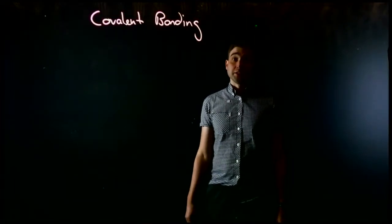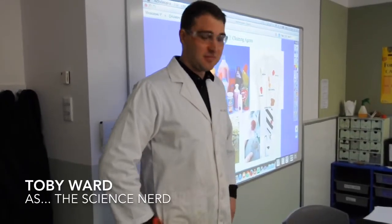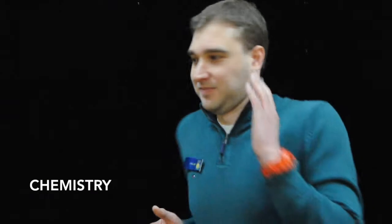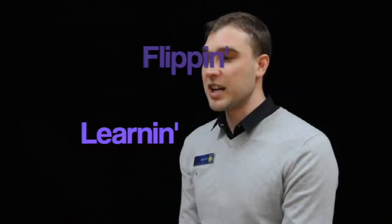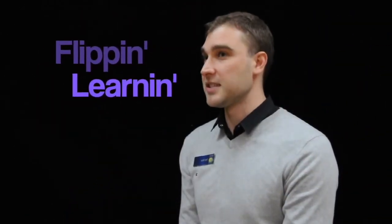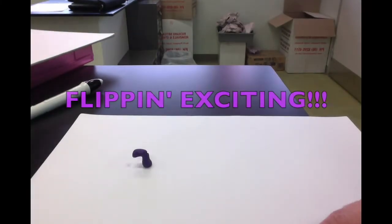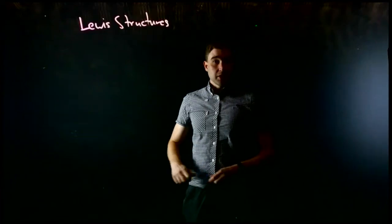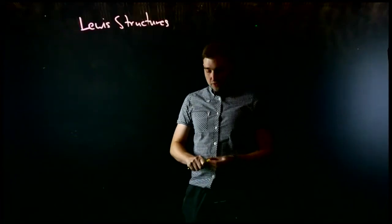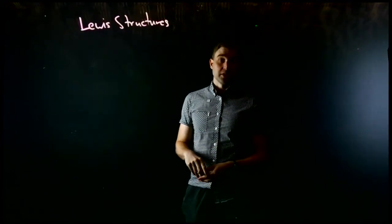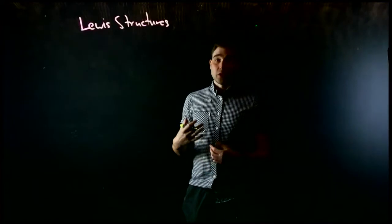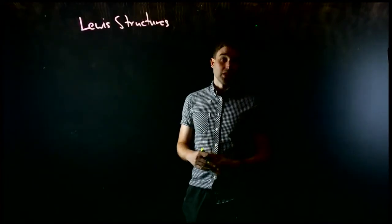Howdy, this is Alan from Flipping Science, and we're looking at covalent bonding. We're going to start by looking at Lewis structures. A Lewis dot structure is where you show the symbol of the element and the number of electrons in its valence shell. We can use this to show ionic bonding, but we're going to focus on covalent bonding today.